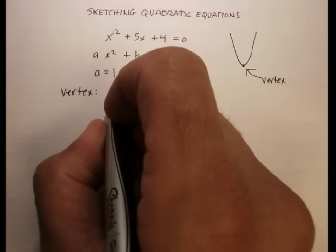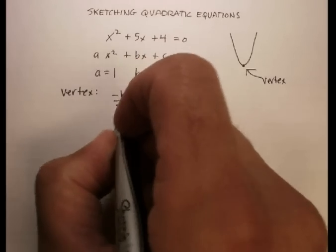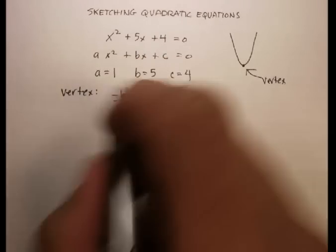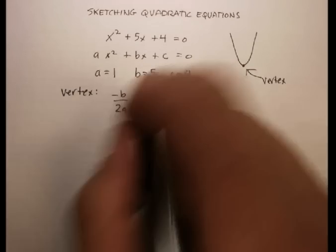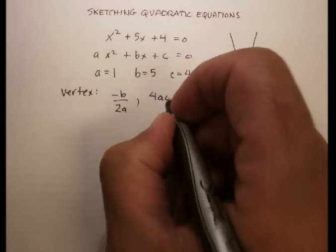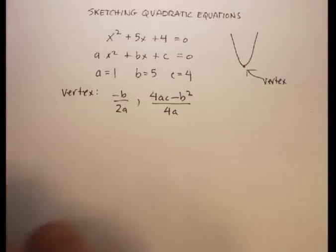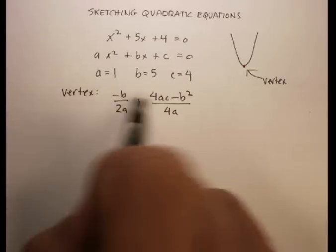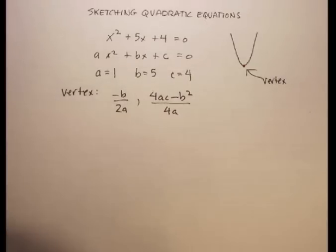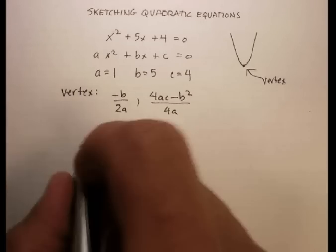The way you find that is you just go negative b over 2a. That'll be your x value. And your y will be 4ac minus b squared over 4a. Now, all we need to do is plug in the a and the b and the c into the correct spots, and we'll be able to calculate what our vertex is. Let's give that a shot.